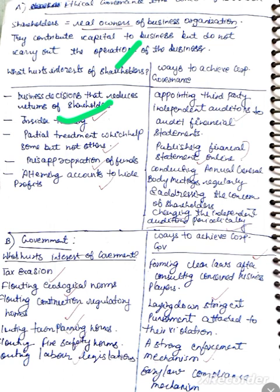Partial treatment — which helps some but not others — that will be partiality. Funds misappropriation — funds are misused. Profits are hidden. These are key issues that corporate governance needs to address.